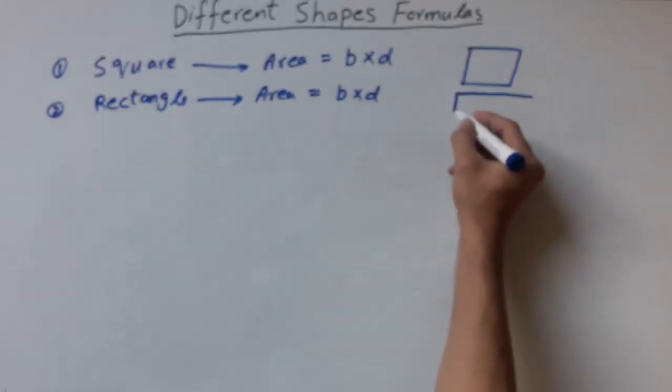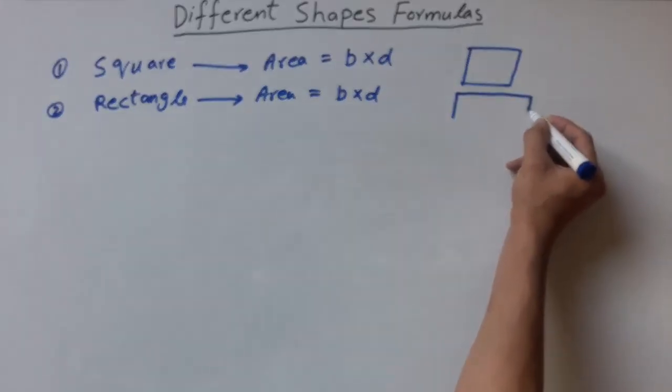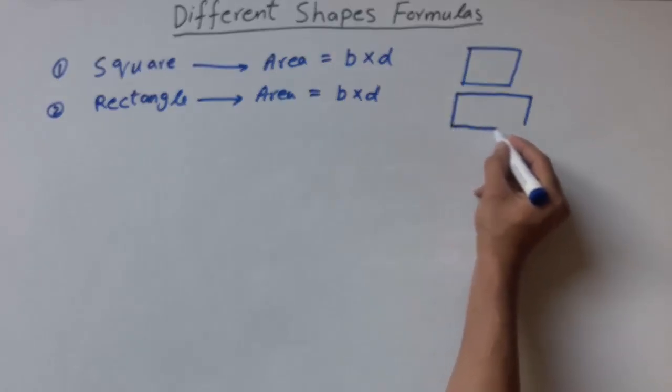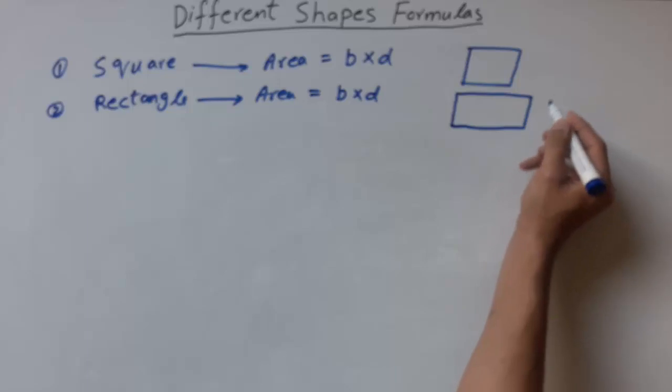In rectangle, we have two lengthy parallel sides and the other two sides are small but in the same length.